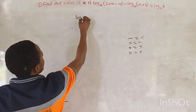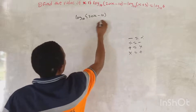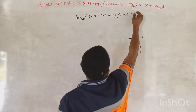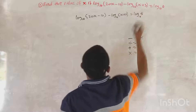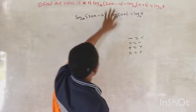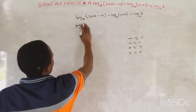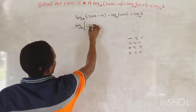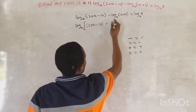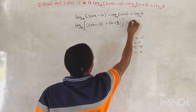So you can solve this question like this: log base 10 of (20S minus 10) divided by (S plus 3), which equals log base 10 of 5. In this place now, you will see what is common — log base 10 is common here and log base 10 is common here. So let's factor out log base 10, and put the expression inside the bracket: open bracket (20S minus 10) divided by (S plus 3), close bracket, and that equals log base 10 of 5.